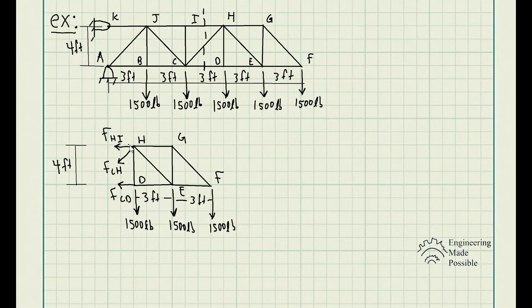I'm assuming all these members HI, CH, and CD are all in tension. So I'm drawing the internal forces of each of these members since I'm cutting right through it. And from here, I could go ahead and analyze this section of the truss using our static equilibrium equation. So the first step is here to try to see what is the best way to go about solving this problem.